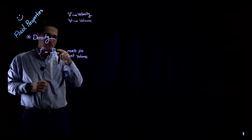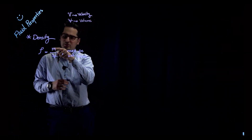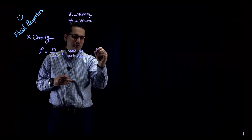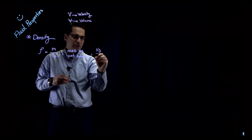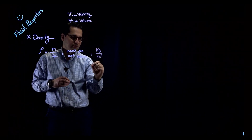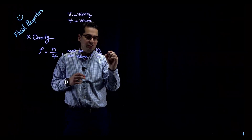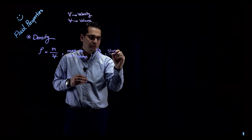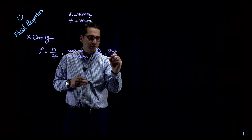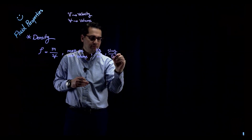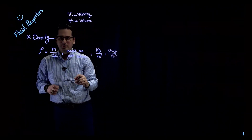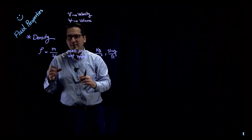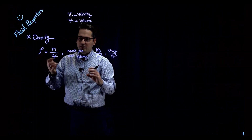Mass per unit volume. In SI, the unit for mass is kilograms and the unit for volume is cubic meters. In the US customary system, the unit for mass is slug and the unit for volume is cubic feet. This is how we define density, and it is one of the most important fluid properties — it tells you how dense your fluid is.